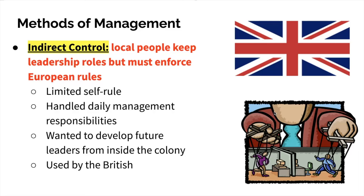Indirect control was much more prevalent in British colonies. This is where local indigenous populations would keep leadership roles within the colony, but they would basically be dictated the rules from the European country. So it was self-rule, but very, very limited. They handled daily management and the nitty-gritty details, but the overarching direction of the colony was still controlled by the European power. The British wanted to develop future leaders to run the colony while still maintaining stability and control over resources and territory.